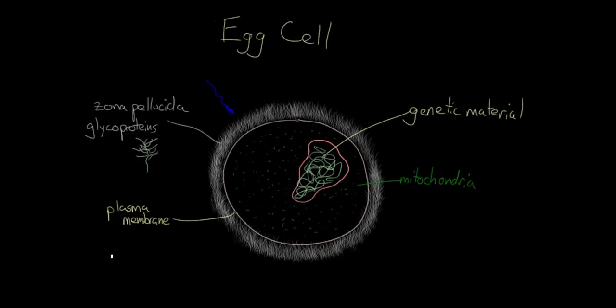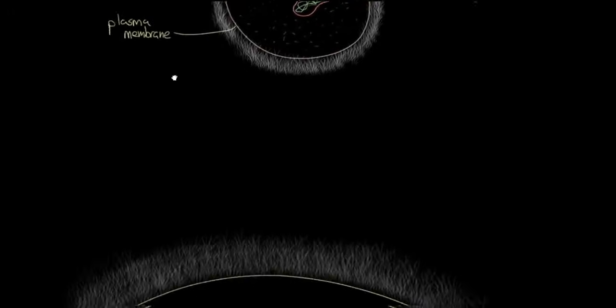So now that you've met the two major players here, the sperm and the egg, or the male and the female sex cells respectively, we can talk about what happens when they meet. And that process is called fertilization. So we'll go ahead and label our egg down here. And we'll put a quick label on this as well. This is the zona pellucida that we talked about earlier.